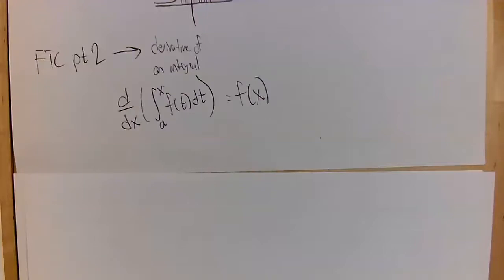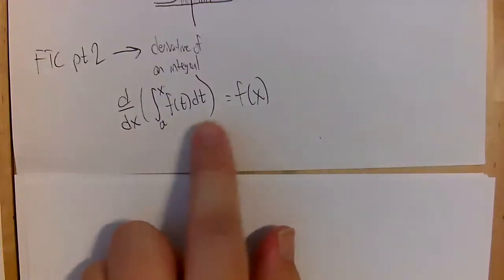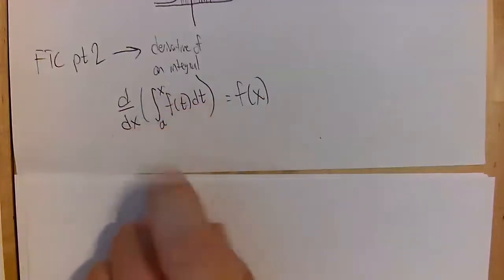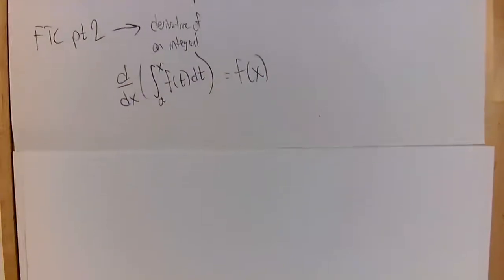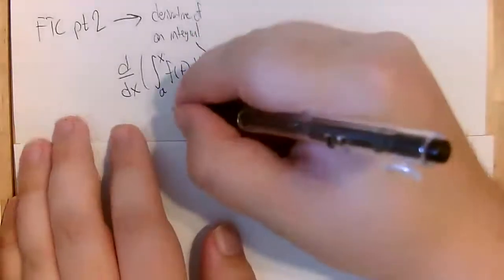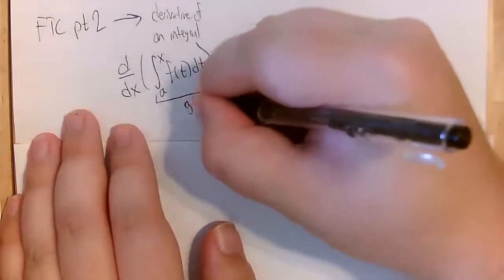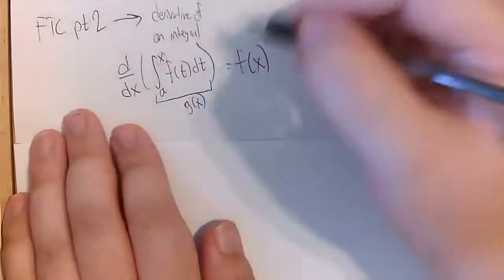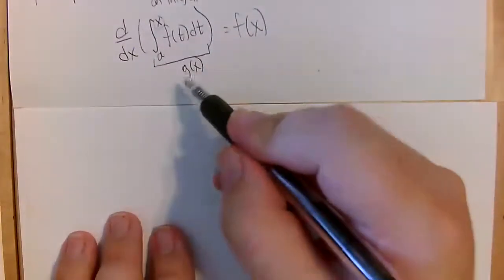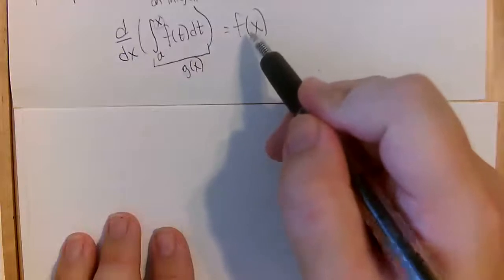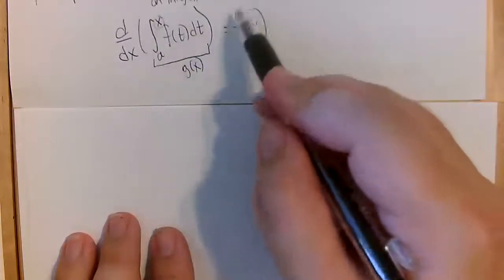Why is this true? Let's look at a proof. Whenever we encounter a new type of function — and this integral from a to x of something is certainly a new type — the best approach is to go back to the limit definition of the derivative. I'm going to call this whole function g of x, since x is my variable. I want to use the limit definition of the derivative for g and show that g prime ends up being f of x.